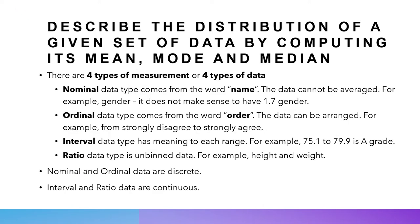After knowing the relationship between population, sample, probability and statistics, next we want to use it. Given a set of data, we can describe it using the mean, median and mode, which we learned in secondary school. Before that, we have to look at what the types of data are. Essentially there are four types of data or four different types of measurement: nominal, ordinal, interval and ratio.